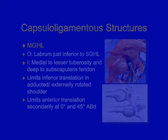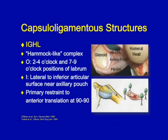The inferior glenohumeral ligament, or ligament complex as it's termed, is really the most important structure in stabilizing against anterior translation of the humeral head. It's been described as a hammock-like complex with both an anterior and posterior band with the supporting axillary pouch. Its primary restraint is to anterior translation at the 90-90 position, which is the typical mechanism for dislocation.